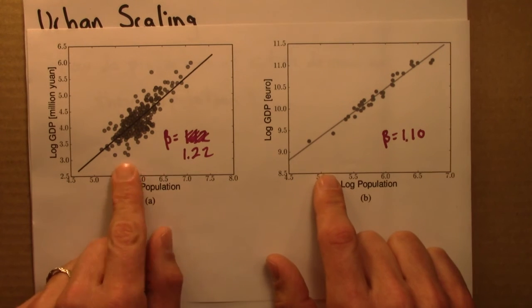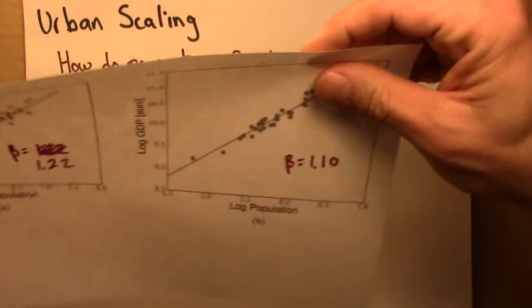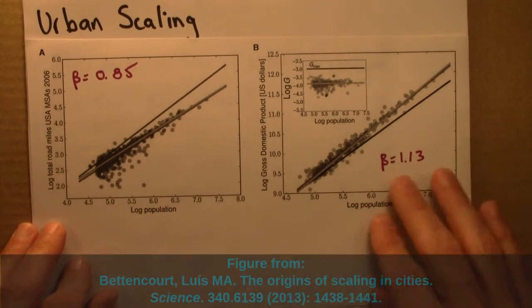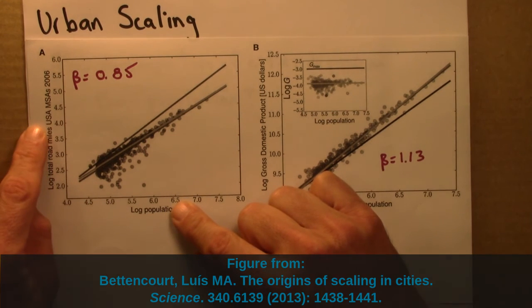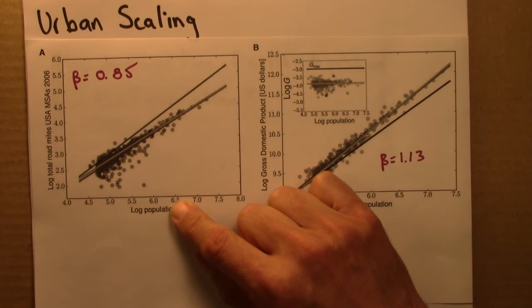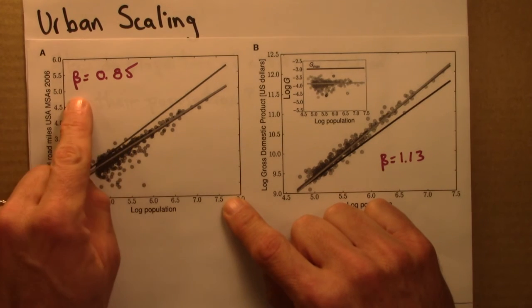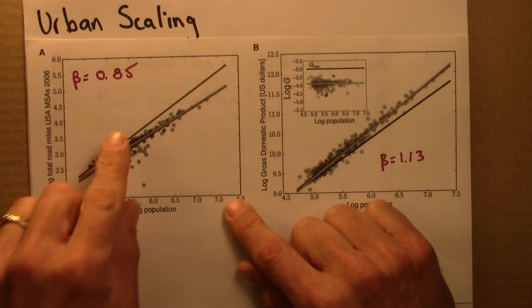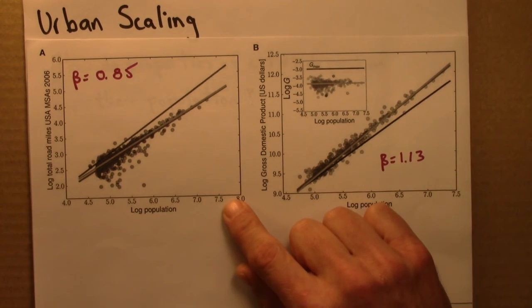So again, in both of these cases, if you double population, you more than double the GDP of a city. Let's look at one more of these sorts of plots. So here, this is now the total road miles in a city. How many roads are there, measured in miles? And again, this is a log log plot population here. And in this case, the exponent is 0.85. So that means the growth is slower than linear. If you double the size of a population on average, you don't double the length of the roads. It's actually less than double. It's 2 to the 0.85.